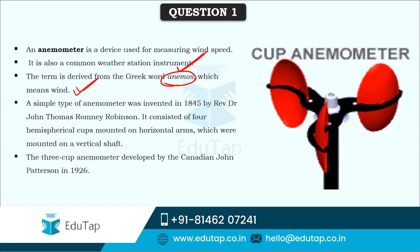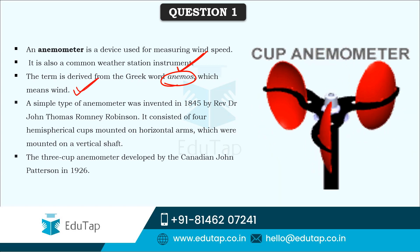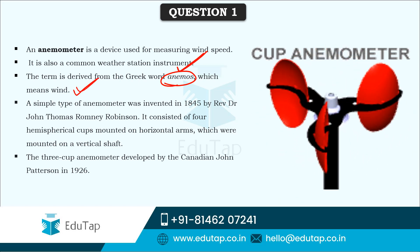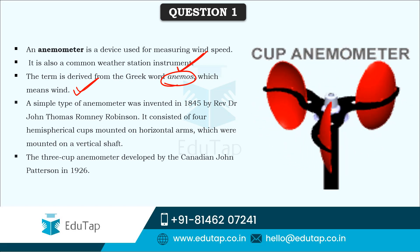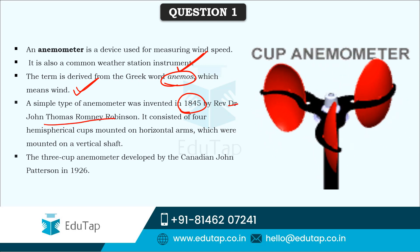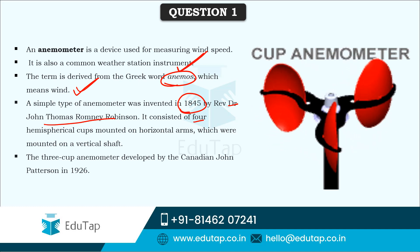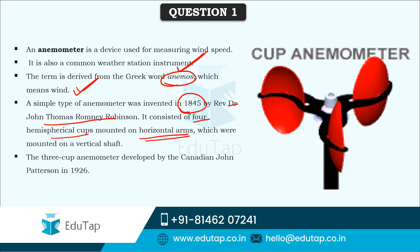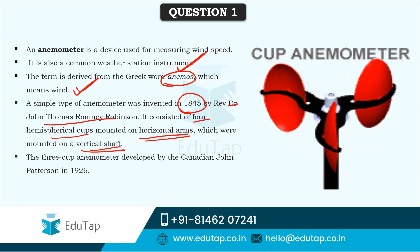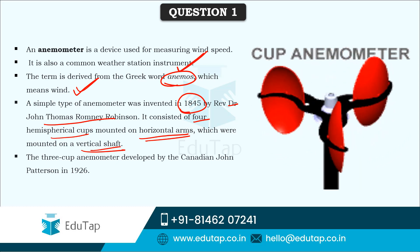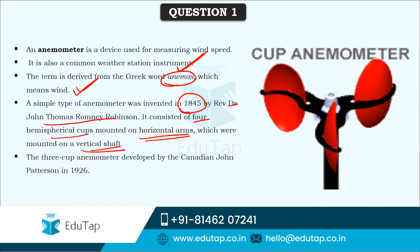A simple type of anemometer was first invented in 1845 by Dr. John Thomas Romney Robinson, which consisted of four hemispherical cups mounted on horizontal arms which were mounted on a vertical shaft. As you can see, that original design had four cups, whereas here you can see three cups.